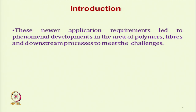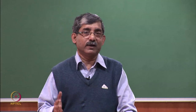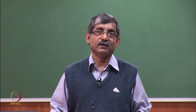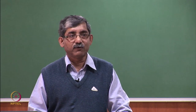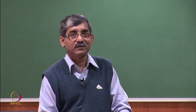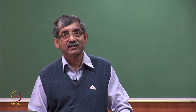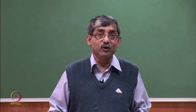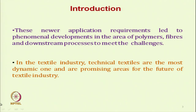This newer application, when we talk about specific applications, requires development of newer polymers, types of fibres, and downstream processes to meet specific challenges for a particular area. For example, woven fabric can be used for filter applications or for thermal protective applications, but their construction, fibre selection, and finishing techniques will be entirely different depending on the application. In the textile industry, technical textiles are the most dynamic and most promising area for the future of the textile industry.